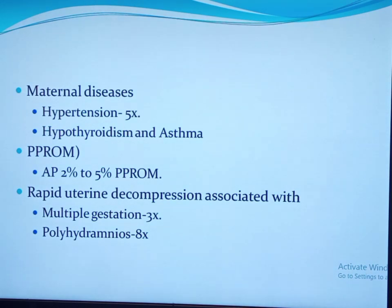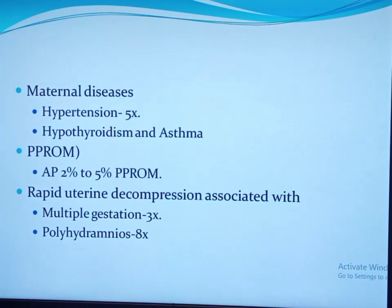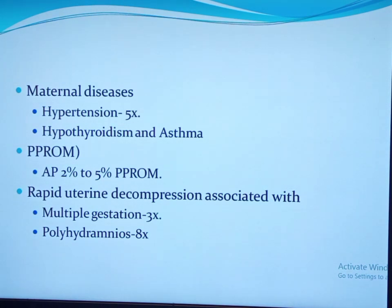Compared with non-traumatic abruption, traumatic abruption carries a higher risk of fetal bleeding due to concomitant placental tearing. Hypertensive disorders increase the risk of placental abruption by fivefold — both chronic and pregnancy-induced hypertension. The severity of hypertension does not always predict the risk, and controlling blood pressure with antihypertensive medication does not decrease the risk. However, preeclamptic women who received magnesium sulfate had a decreased risk. Hypertension is strongly associated with severe abruption: 40 to 50 percent of women with abruption severe enough to cause fetal death have underlying hypertension. Maternal hypothyroidism and asthma also increase the risk.